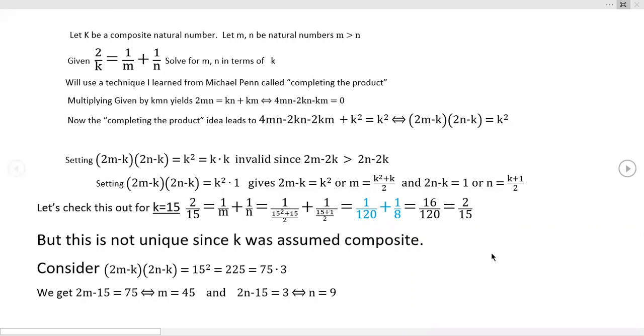Good evening, everybody. I'm coming to you with something that's just fascinating from a Michael Penn video. His approach was to start out with k being p or prime and trying to show that this thing was unique. I'm just coming at it from a slightly different angle. It's the same basic structure. I'm going to go ahead and assume that k is composite.